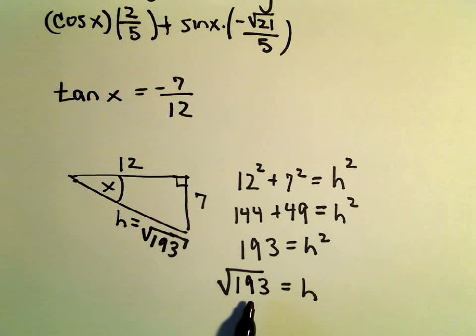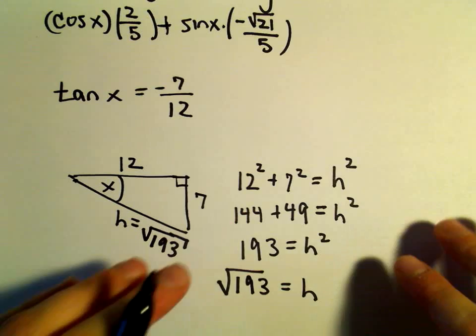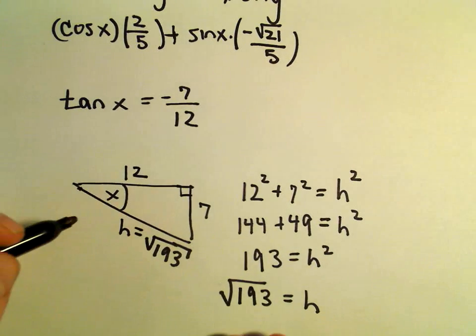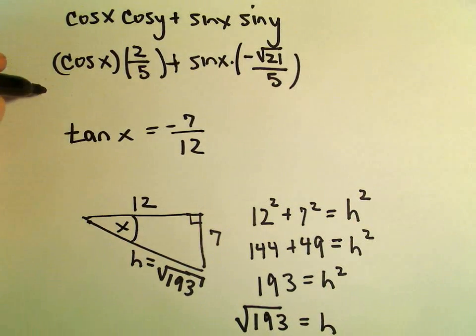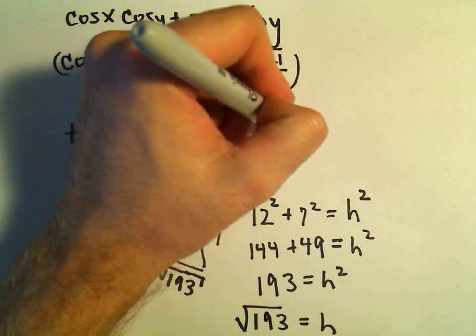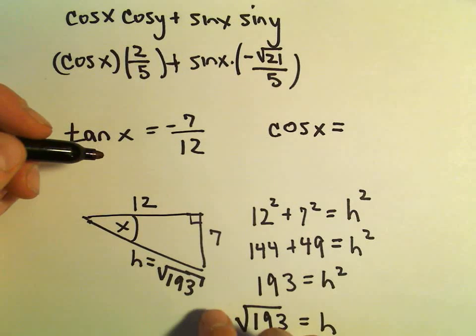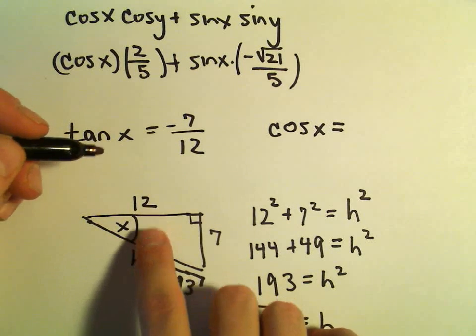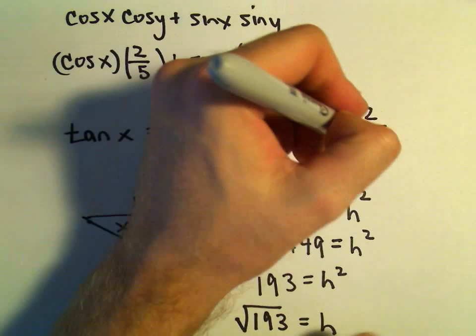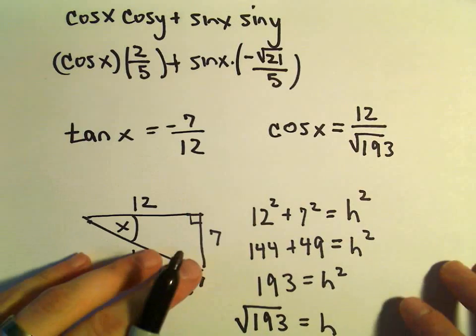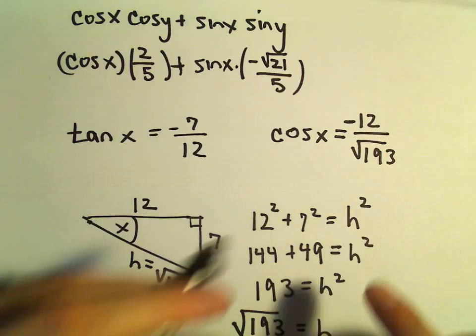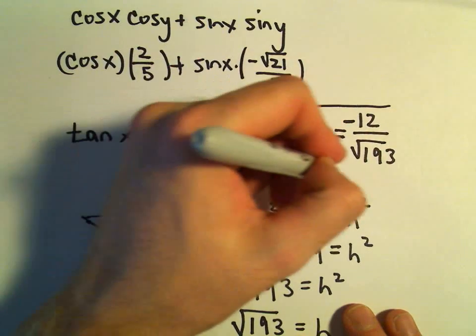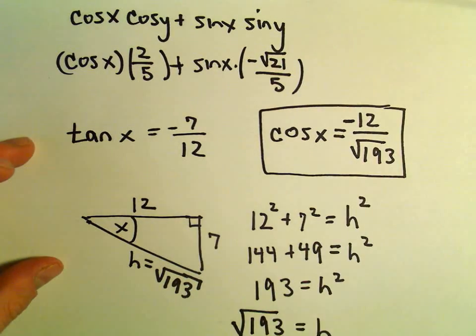This is going to be equal to the square root of 193. The square root of 193 might be prime, might not—we'll think about that in a moment. But the main idea is from this triangle now we can read off the value of cosine x and sine x. Cosine x is adjacent over the hypotenuse, which will be 12 over the square root of 193. But we have to be careful—this is in quadrant 4, and in quadrant 4 cosine is negative. So cosine of x will be negative 12 over the square root of 193.